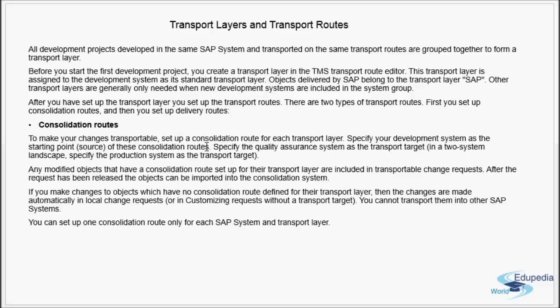All development projects developed in the same SAP system and transported on the same transport routes are grouped together to form a transport layer. In a particular development system, you can do any developments — one related to SD, one related to Finance, or whatever it is. In part 2 of this CTS basics series, we came across the term 'packages.' Whenever you build anything new in the repository, you first create a package, and later add new objects to the existing package. Similarly, we can have any number of development projects in the SAP system.